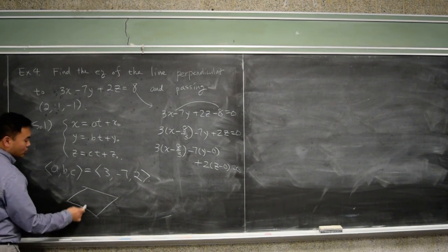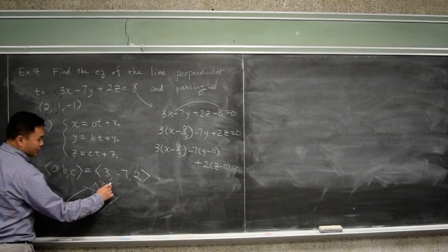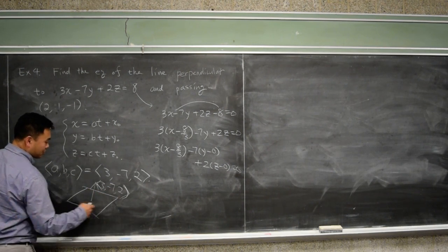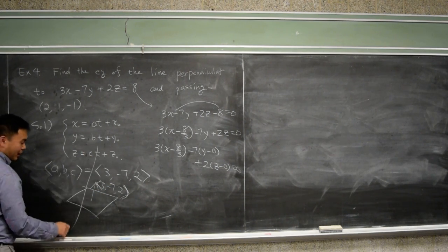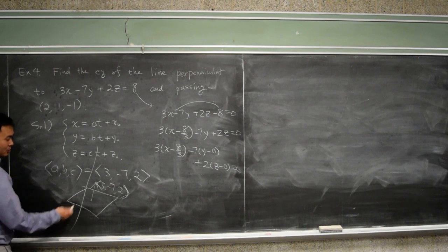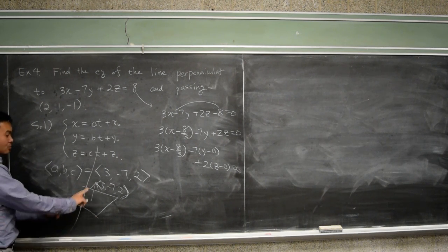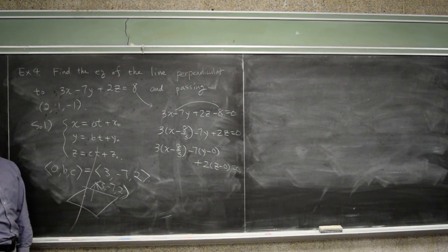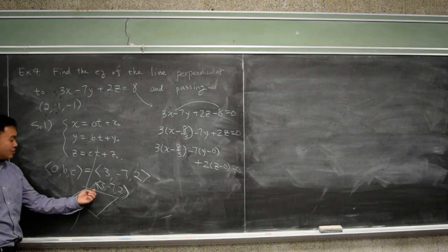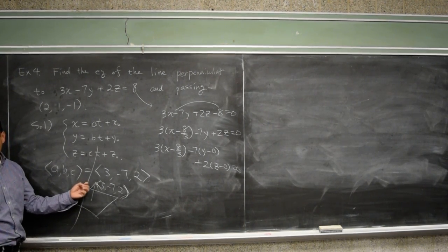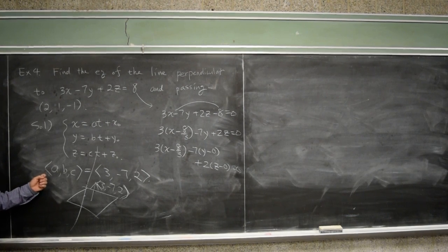Here's the picture. We know that 3, negative 7, comma 2 is perpendicular to this plane. And we know that the line is another one that's perpendicular. What can we say? The two directions should be parallel to each other, right? So we can take this as the direction of the line that we want to find. That's basically the thing that we're trying to do. So we have that.